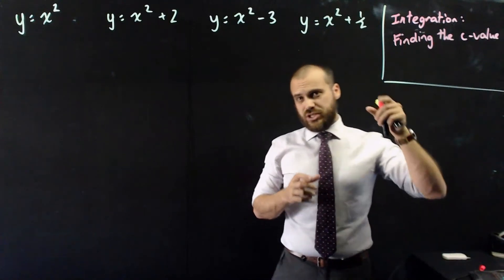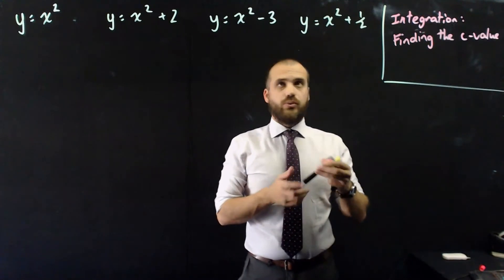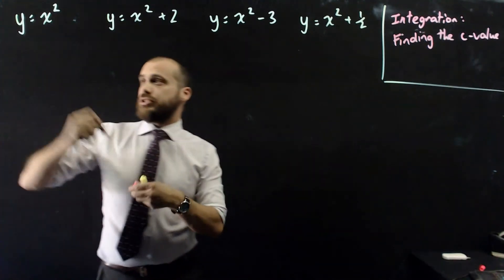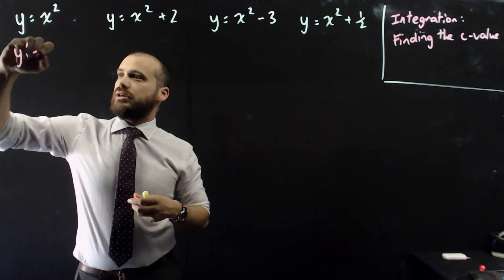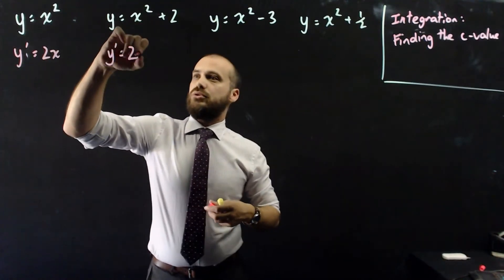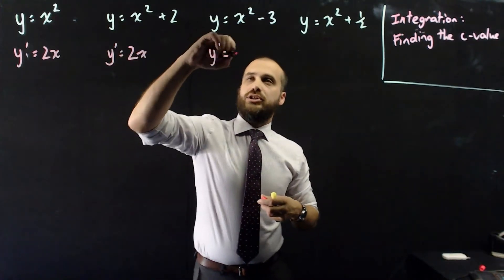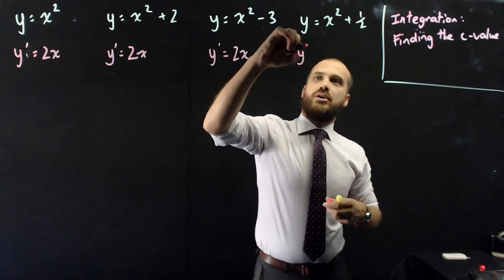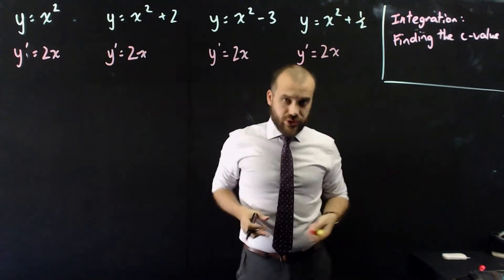This time I'm going to do integration — specifically finding the c value. Watch what happens when I derive all of these equations: y' equals 2x, and the constant disappears each time.